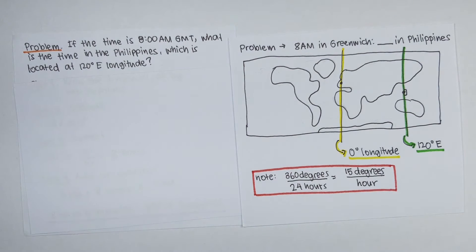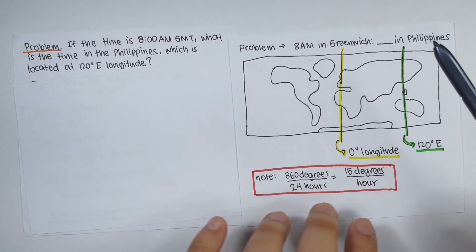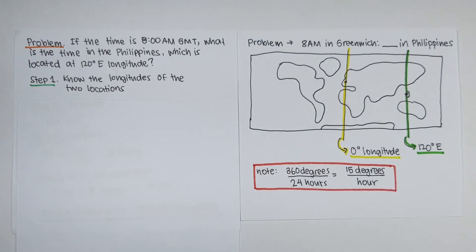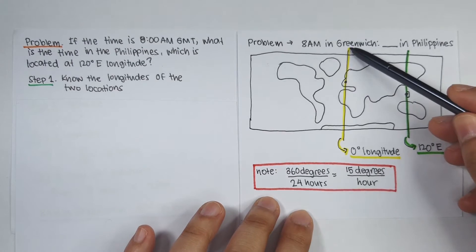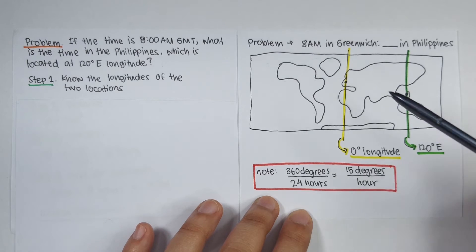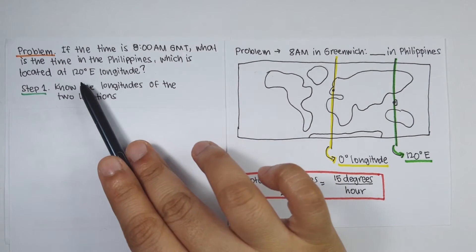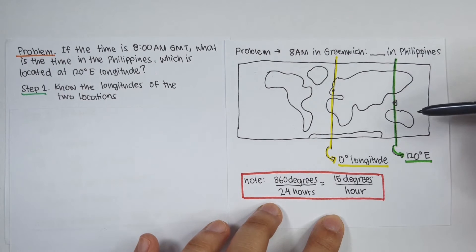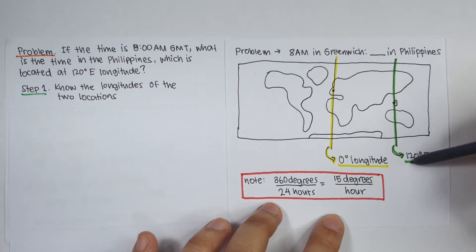GMT means Greenwich Mean Time, meaning that at Greenwich, England, the time now is 8 in the morning. The question is: if it is now 8 a.m. in Greenwich, what time is it in the Philippines? Step number one is to know the longitudes of the two locations. Greenwich, England is located on the prime meridian, so its longitude is 0 degrees. The Philippines is at 120 degrees east. If we graph that, Greenwich is at 0 degrees and the Philippines is at 120 degrees east.